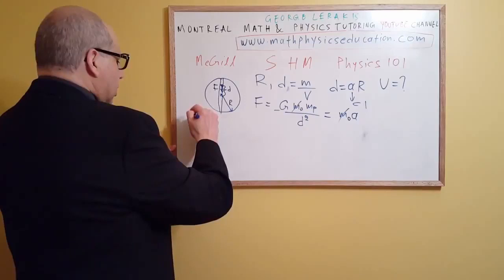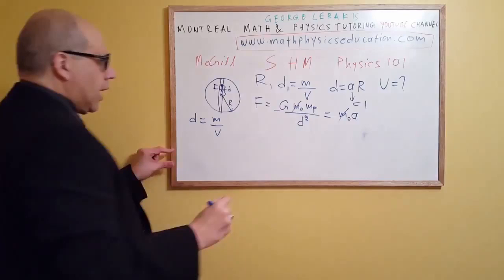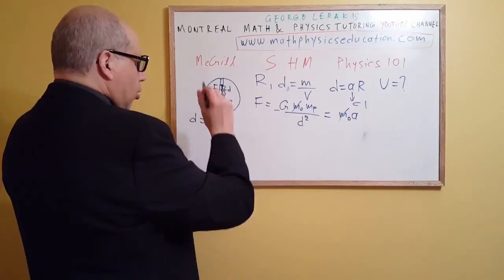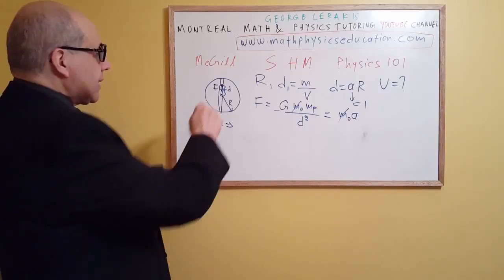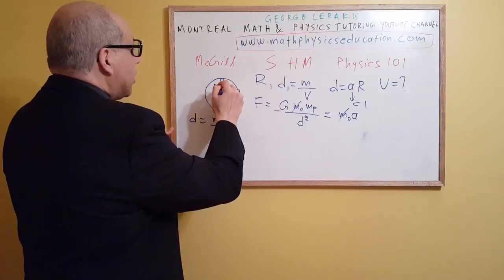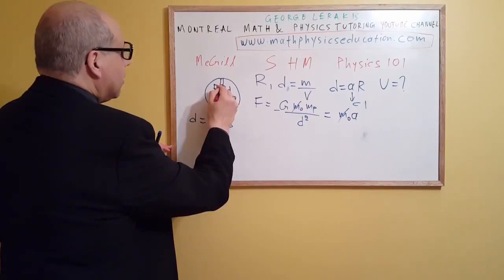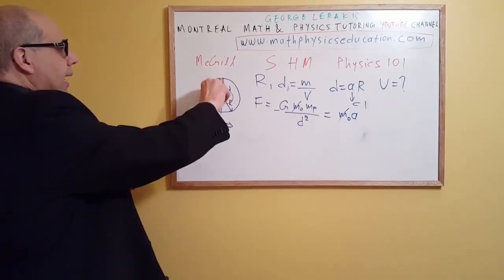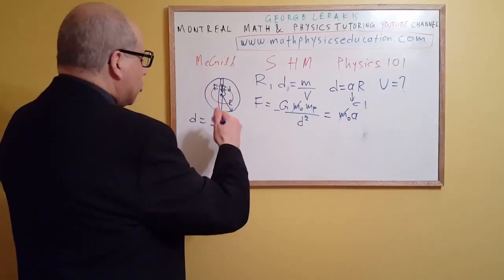Now taking the density equation — density equals mass over volume — we want to find the mass of the planet. But actually, the part of the planet exerting the gravitational force on the object is only the inner sphere up to the radius d. That's the part within this inner circle.